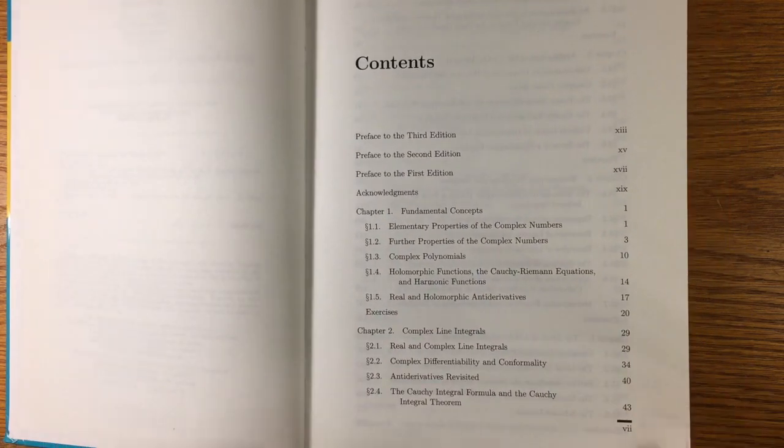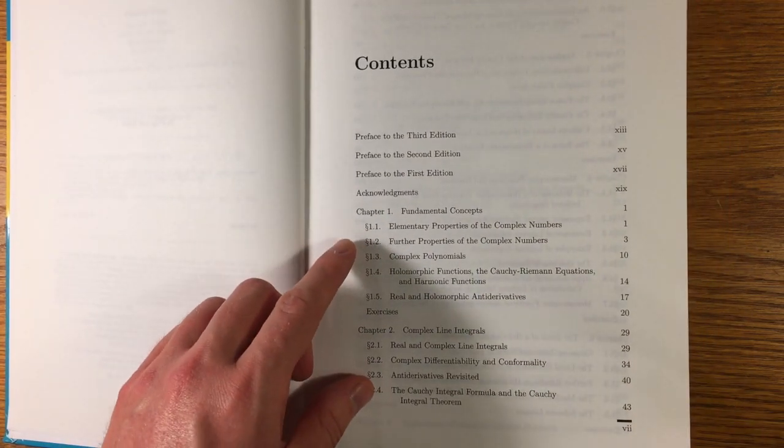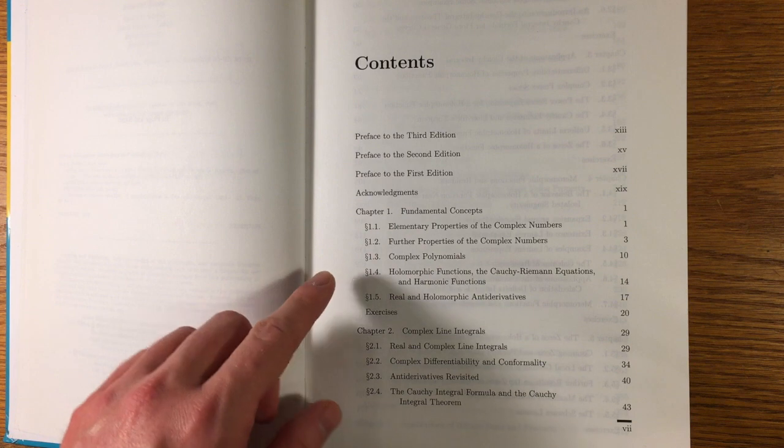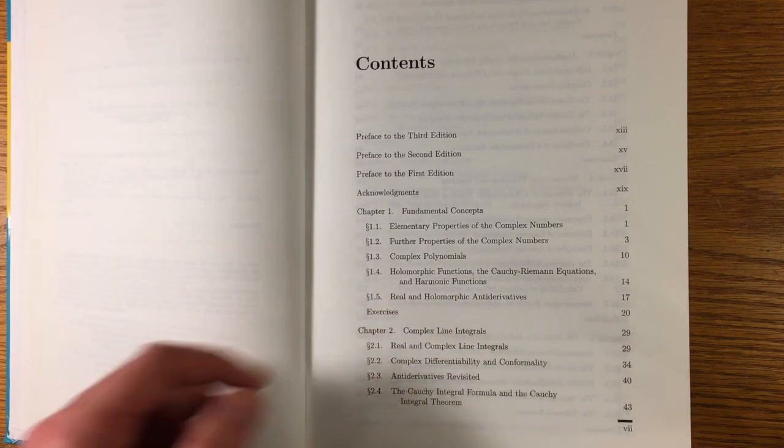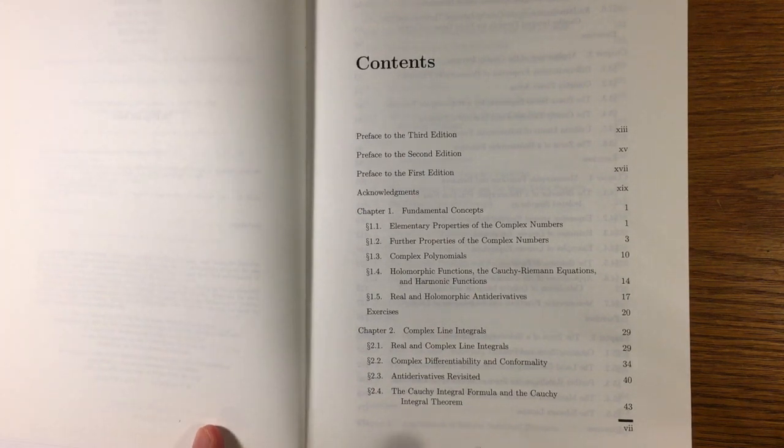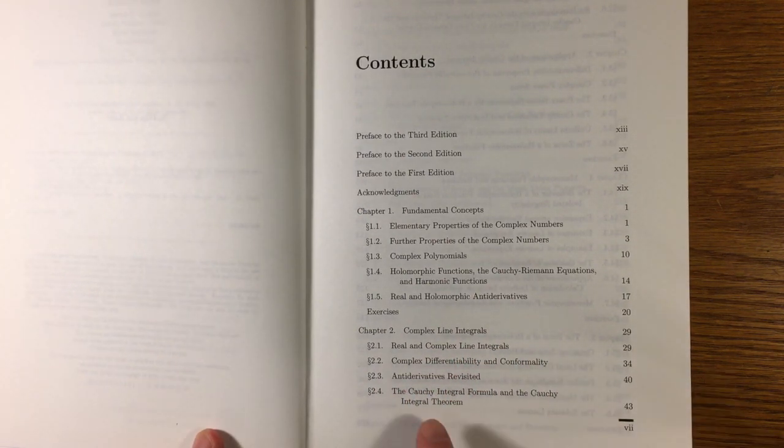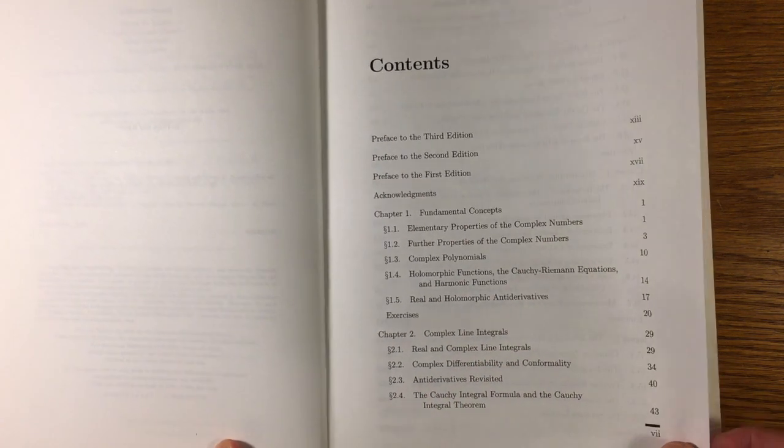So here's the contents. It really starts right at the beginning with the complex numbers and functions of complex numbers, the condition of being holomorphic and the Cauchy-Riemann equations. The second chapter is on line integrals and the Cauchy integral formula, the Cauchy integral theorem.